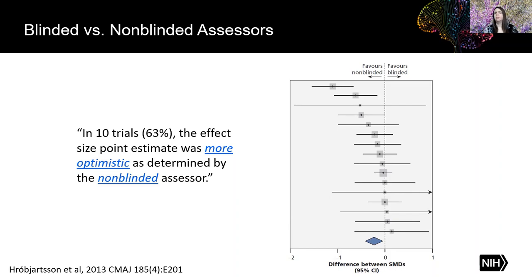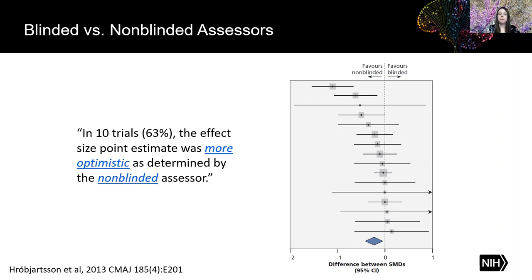So what happens when we don't control for bias? This is a meta-analysis from a systematic review of human studies where they compared the effect sizes — the magnitude of the result — of the outcome measure in both blinded and unblinded assessors in the same study. It shows the standard mean difference between the blinded and unblinded measures. In many of the studies, they saw increased effect sizes in the unblinded condition. In 10 trials, or 63%, the effect size point estimate was more optimistic as determined by the non-blinded assessor.